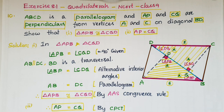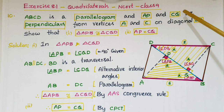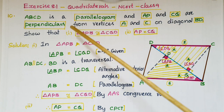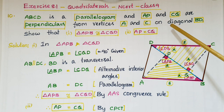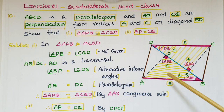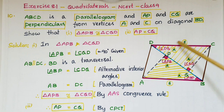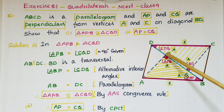In this problem, ABCD is a parallelogram and AP and CQ are perpendiculars from vertices A and C on diagonal BD. So here ABCD is a parallelogram. Parallelogram means opposite sides are parallel and equal, and here AP and CQ are perpendiculars on diagonal BD.